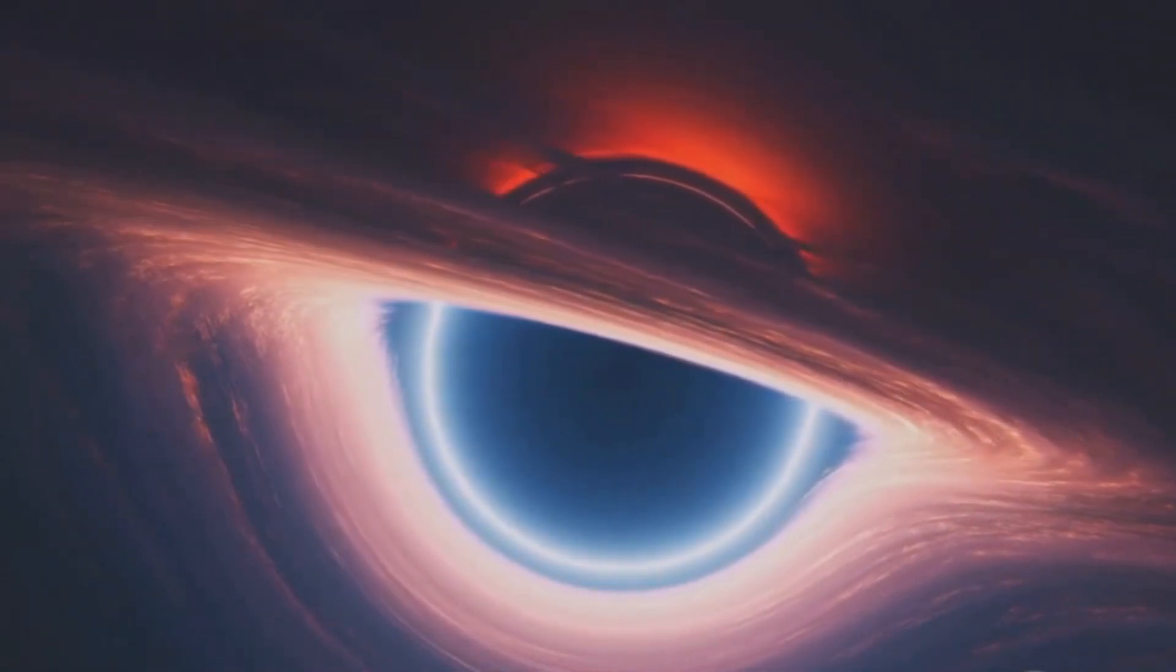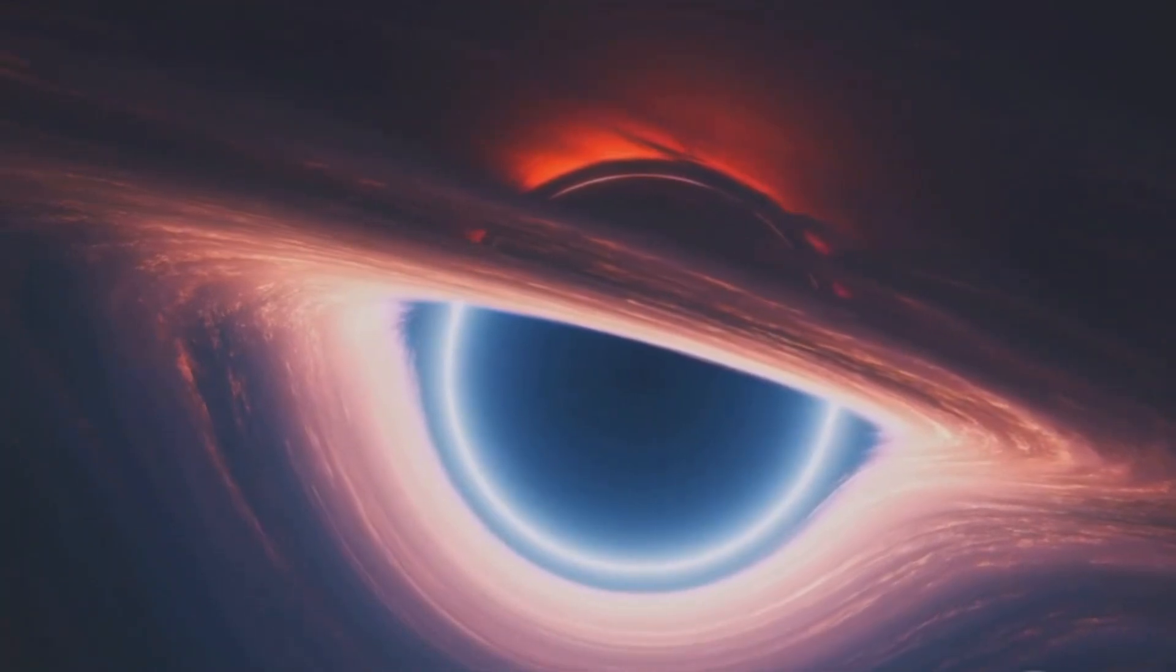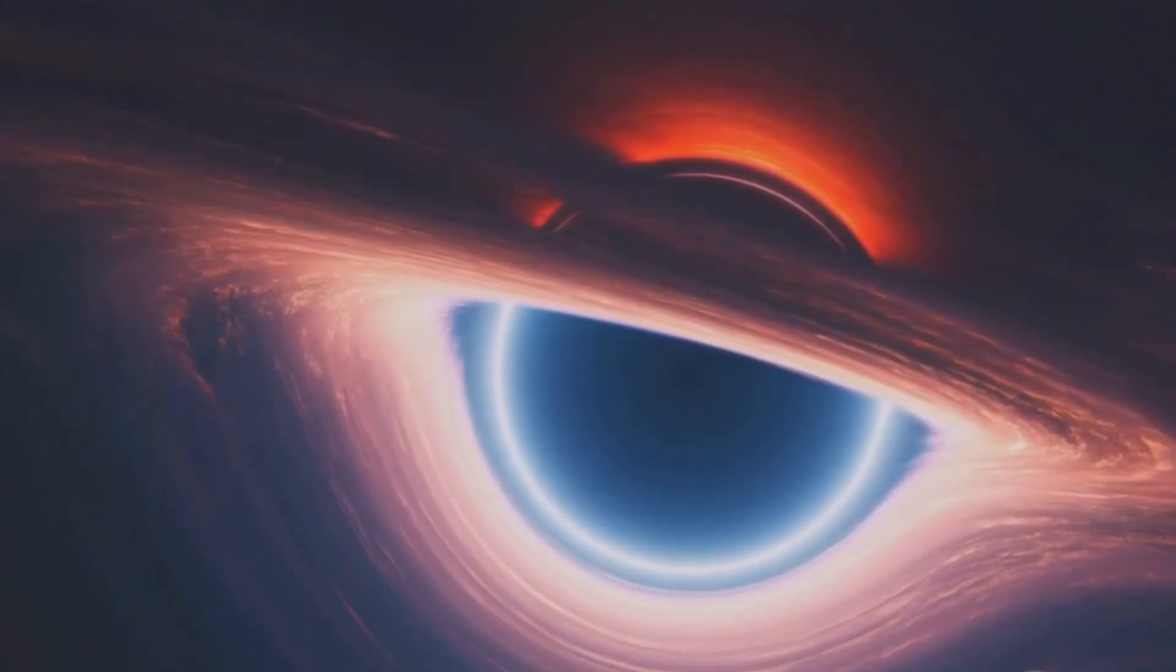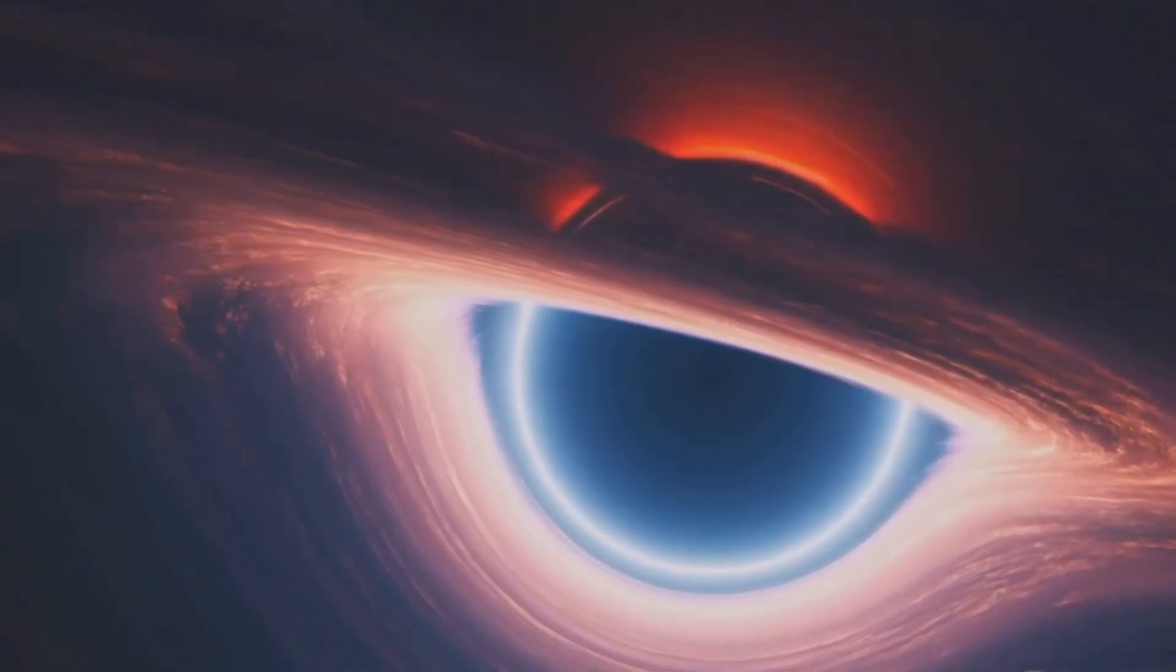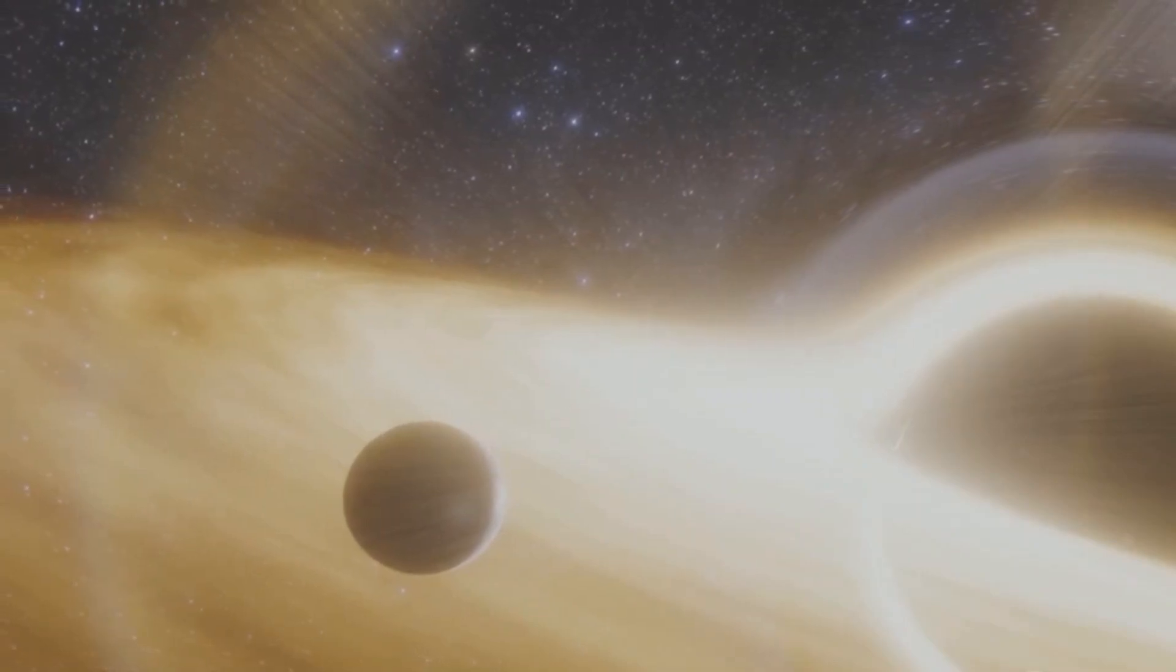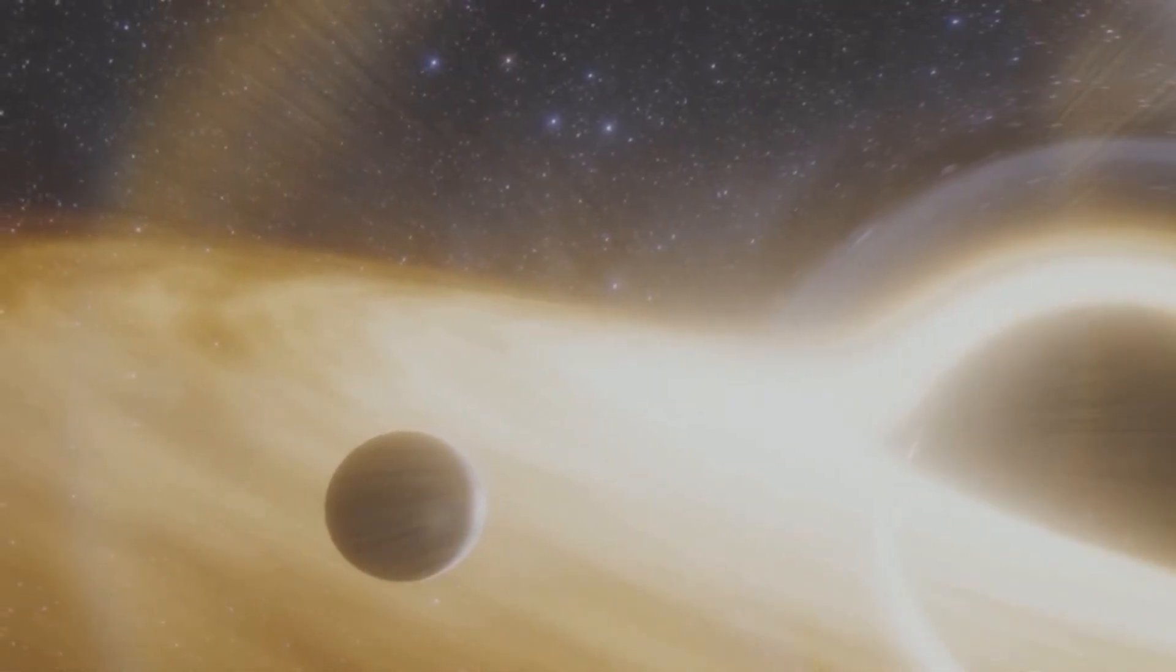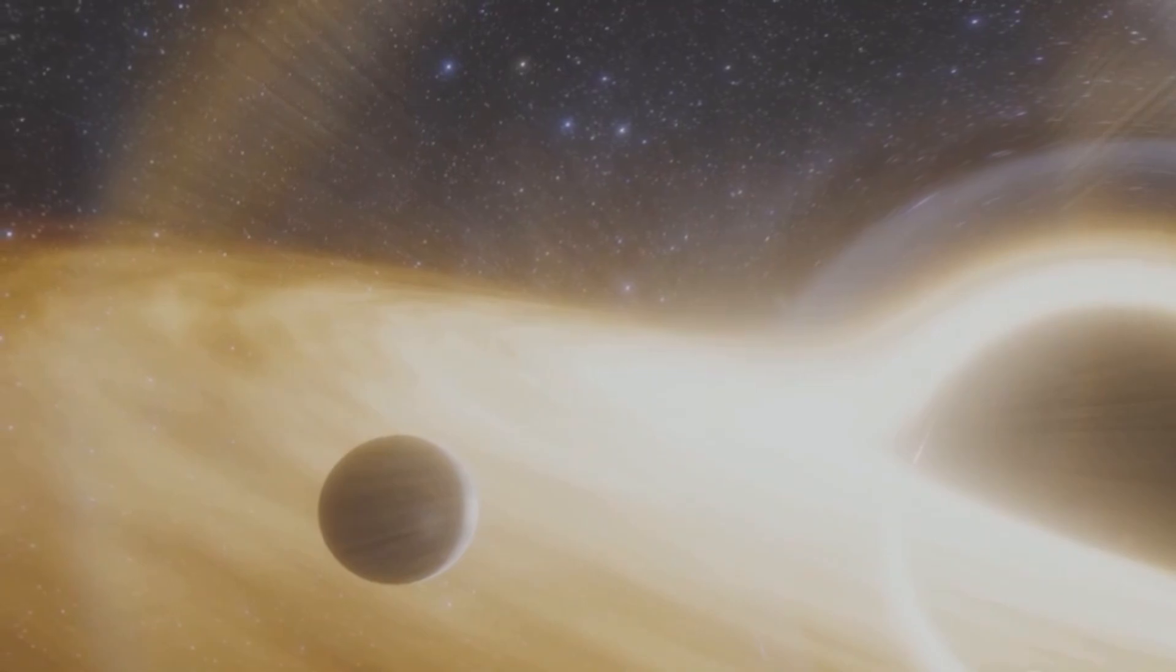What sets Phoenix A apart is its sheer size. It dwarfs previously known black holes. The event horizon of this black hole spans billions of kilometers, about 100 times the distance from the Sun to Pluto.